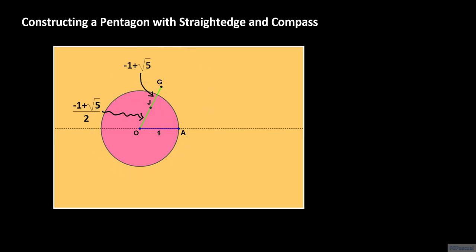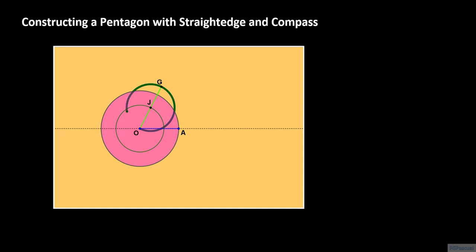So we just have to bisect segment OJ. We center our compass at O and construct a circle of radius OJ. We then center our compass at J and construct a circle of the same radius. Let the points of intersection between these two circles be the points K and L. Then segment KL is a perpendicular bisector of segment OJ. And so if M is the intersection between segment OJ and segment KL, the length of segment OM is equal to one-fourth of negative 1 plus the square root of 5, or cosine 72 degrees.